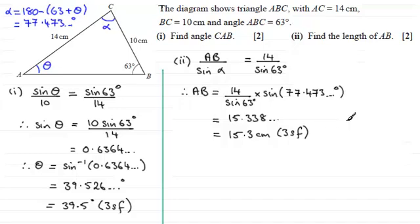I did say you could do this by the cosine rule, so I'll give you that method. By the cosine rule, AB squared equals the sum of the squares of the other two sides, so that's 14 squared plus 10 squared. Then we subtract twice the product of these two sides, so 2 times 14 times 10, times the cosine of the angle opposite the side we're trying to find, which is cosine of alpha. I'll put alpha in as 77.473 and so on degrees.